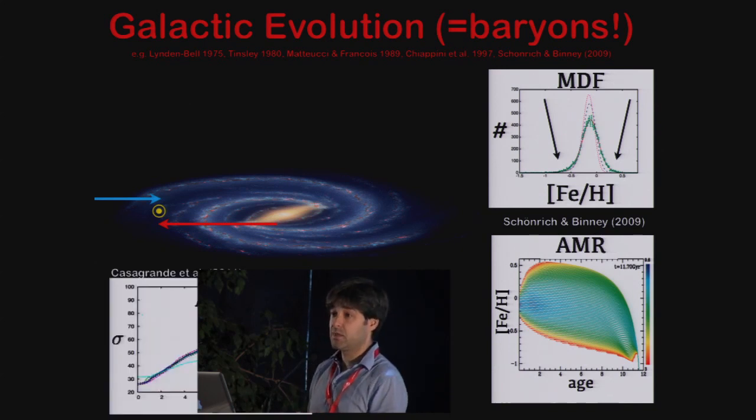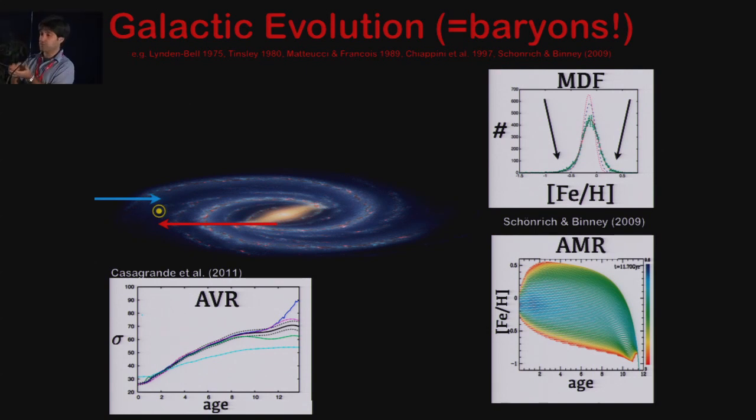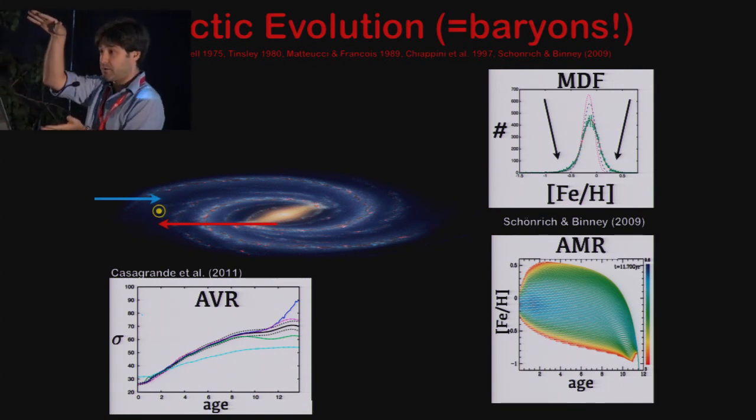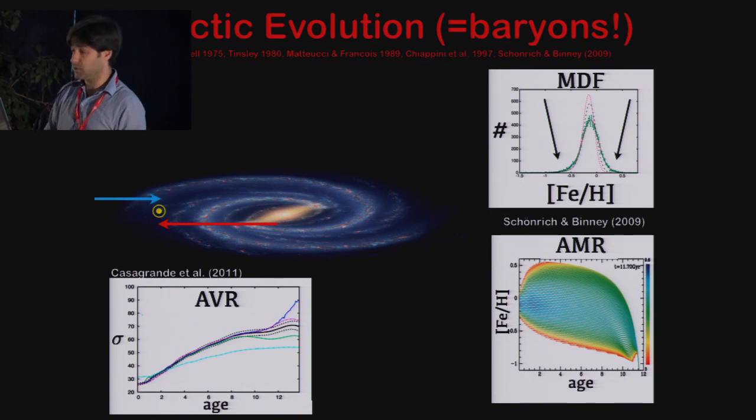And not only that, because then you have this dynamical evolution which goes on, essentially as stars evolve, because of the dynamical evolution, their velocity essentially gets increasingly more scattered. So you increase the dispersion in their velocity as time goes on. And here you see the last plot, essentially you see that this increase in velocity dispersion, which essentially tells you that older stars then are found preferentially higher above the disc because of this sort of dynamical heating that goes on.